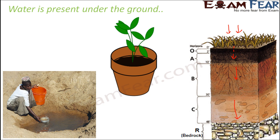A simple example you might have observed in your garden: when you water a plant, the water seeps inside the soil, and that is what makes the soil moist. Water from the soil is then absorbed by the plants through their roots. So the presence of moisture in the soil is evidence of the presence of groundwater, which tells us that water is present below the ground.